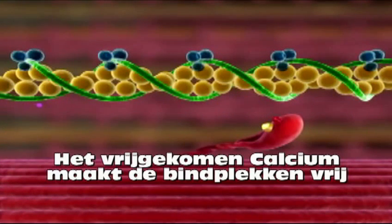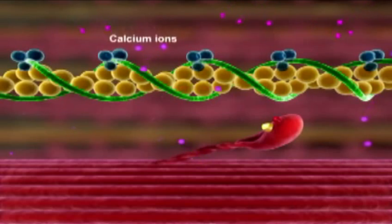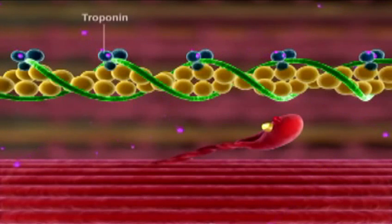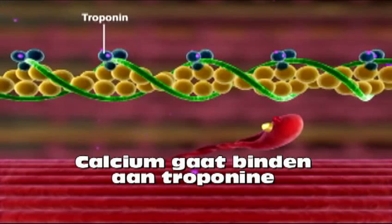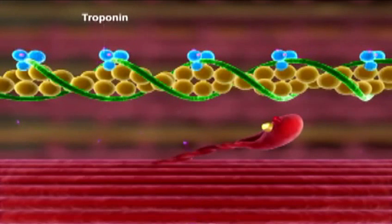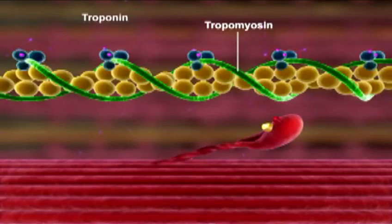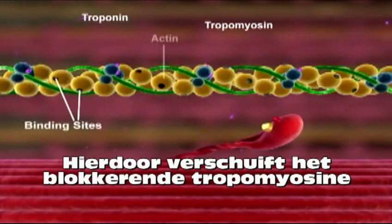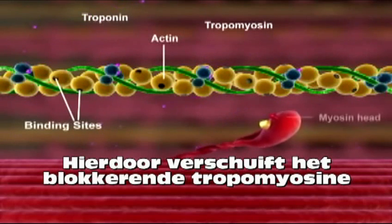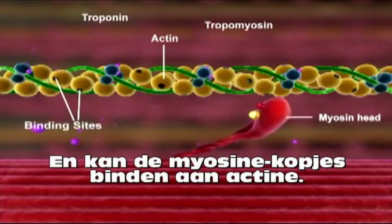The formation of a crossbridge is initiated when calcium ions, released from the sarcoplasmic reticulum, bind to troponin. This binding causes troponin to change shape. Tropomyosin moves away from the myosin binding sites on actin, allowing the myosin head to bind actin and form a crossbridge.